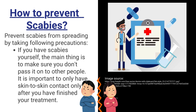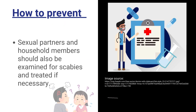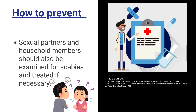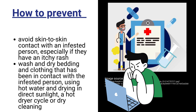To prevent scabies from spreading, if you have scabies yourself, the main thing is to make sure you don't pass it on to other people. Only have skin-to-skin contact after you have finished your treatment. Sexual partners and household members should also be examined for scabies and treated if necessary. Avoid skin-to-skin contact with an infested person, especially if they have an itchy rash.